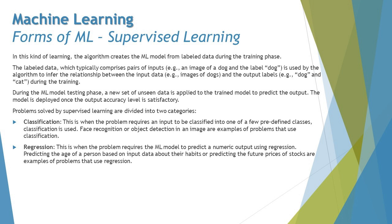Problems solved by supervised learning are divided into two categories. The first is classification — when a problem requires an input to be classified into one of a few predefined classes. Face recognition and object detection in an image are examples. These models classify inputs into specific categories; for face recognition, it identifies your face in one category and puts all other faces into different categories.